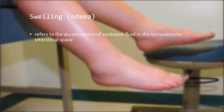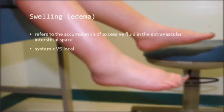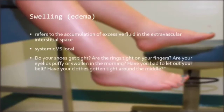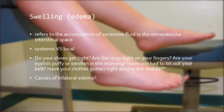Swelling refers to the accumulation of excessive fluid in the extravascular interstitial space. You need to differentiate whether the edema is systemic or local, as management will differ. Simple questions to ask include: Do your shoes get tight? Are your rings tight? Are your eyelids puffy in the morning? Have you had to let out your belt? Possible causes of bilateral edema include cardiac causes such as heart failure, hepatic causes such as liver cirrhosis, renal causes such as chronic renal failure, and nutritional causes such as protein malnutrition.